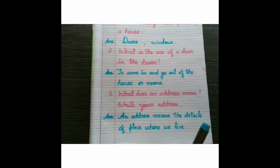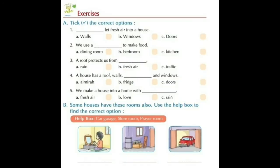Now let us do some exercises. Questions section A — tick the correct options. Number one: Blank let fresh air into a house. Option A: walls, Option B: windows, Option C: doors. The correct answer is Option B — windows let fresh air into a house.